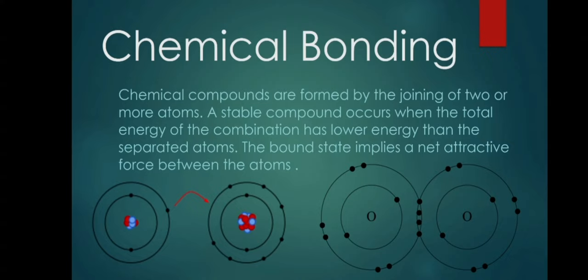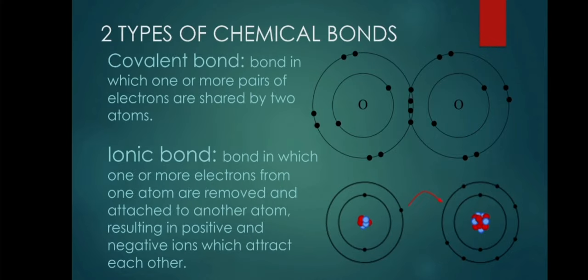Let's talk about chemical bonding. Chemical compounds are formed by the joining of two or more atoms. A stable compound occurs when the total energy of the combination has lower energy than the separated atoms. The bound state implies a net attractive force between the atoms. There are two types of chemical bonds: covalent bond, where one or more pairs of electrons are shared by two atoms, and ionic bond, where one or more electrons from one atom are removed and attached to another atom, resulting in positive and negative ions which attract each other.